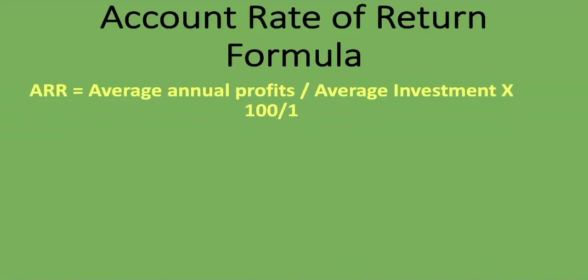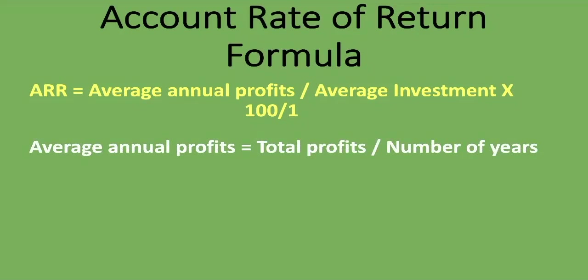The average annual profits is where students usually struggle. In the previous example we were given the net profit, so we just divided by the number of years. The average annual profits is calculated by taking the total profits divided by the number of years. If you are given profits for the next five years, you add them all together and divide by the number of years to get the average annual profits — that is your numerator.